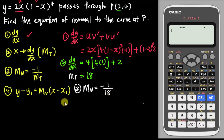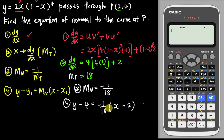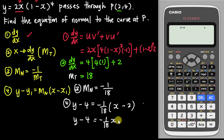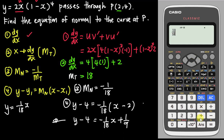The last step is to form the equation: y minus y1 equals gradient of normal times (x minus x1). So y minus 4 equals negative 1 over 18 times (x minus 2). Expanding this gives y equals negative 1/18 x plus 2/18, which simplifies to 1/9, and adding 4 gives the final answer: y equals negative 1/18 x plus 37/9. This is the equation of the normal.